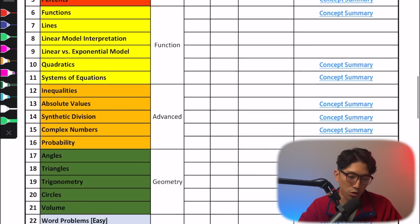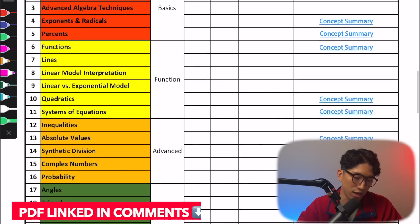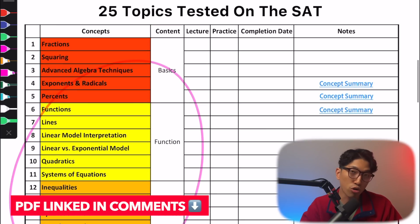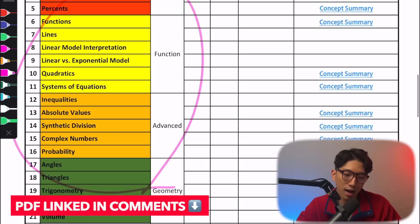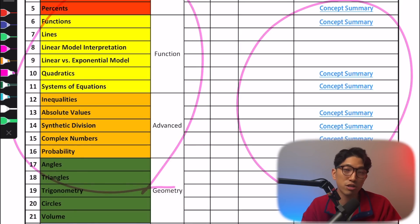I'm going to link it down below. I have created a 24 topic list right here. It's going to tell you what each of these topics are going to be and the order in which you're supposed to study them. And for most of them, I'm going to have a concept summary so that you can watch the video, learn exactly what you need to know for the SAT and start acing the SAT.